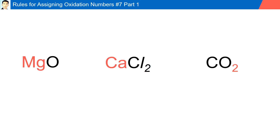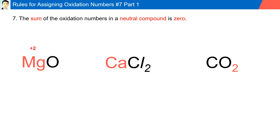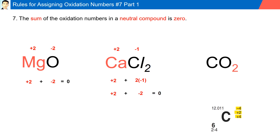Rule number seven: the sum of oxidation numbers in a neutral compound is zero. For example, magnesium has a plus two charge and oxygen has a minus two charge; adding them up gives zero. In calcium chloride, calcium has a plus two and chlorine has a minus one; since there are two chlorines, when we sum it up we have a net charge of zero.